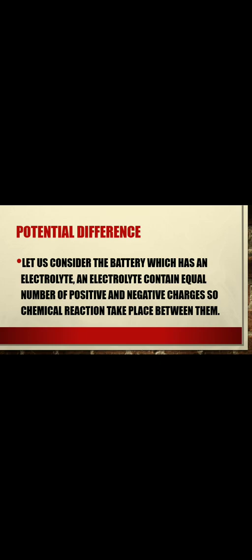Let us consider an experiment with a battery which has an electrolyte. A battery possesses an electrolyte, and an electrolyte contains equal numbers of positive and negative charges. A chemical reaction takes place between them because they are aligned in order — positive charges aligned in order, negative charges aligned in order — so the chemical reaction takes place between them. This is how the electrolyte works.